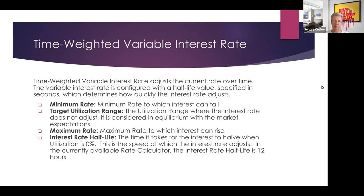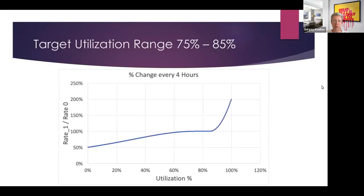For example, if the target utilization range is 75–85%, there is no rate change within that band. But when utilization rises to 90%, the rate increases rapidly with each update every four hours. Conversely, when the utilization ratio falls, the rate falls too.